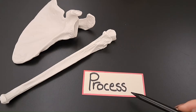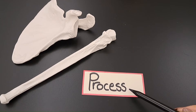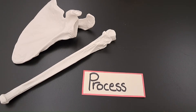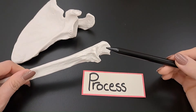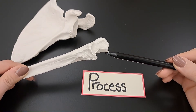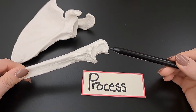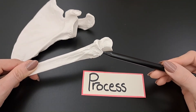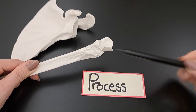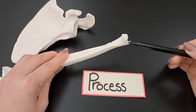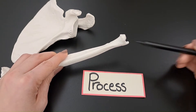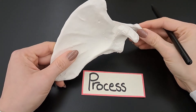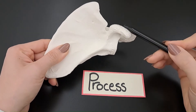Moving to the last projection that is a site for muscles and ligaments attachment, a process. A process is a bony prominence. An example on the ulna is the olecranon process. This is the coronoid process. This is the styloid process on the ulna. Another example on the scapula, the shoulder blade, is the coracoid process.